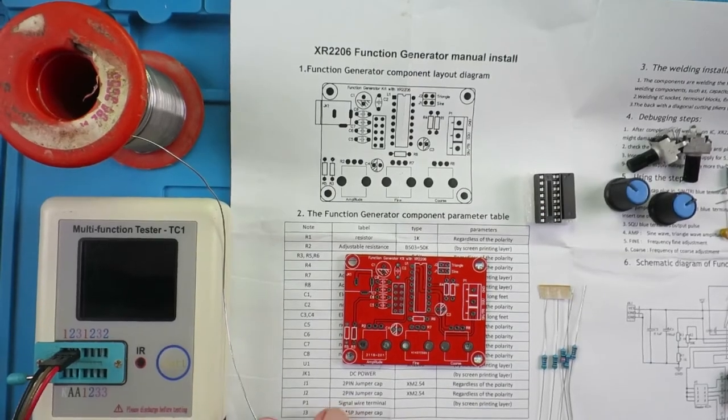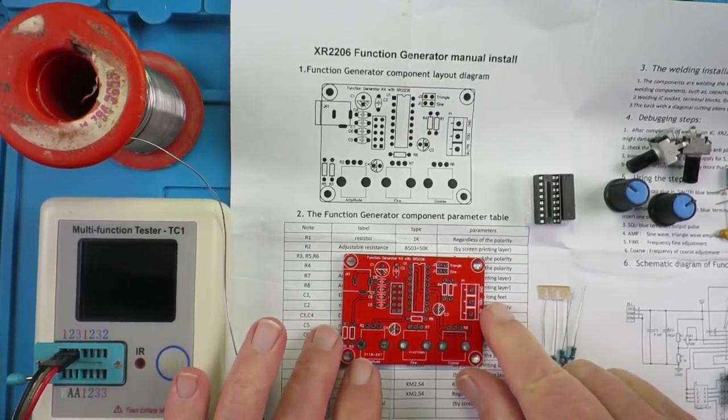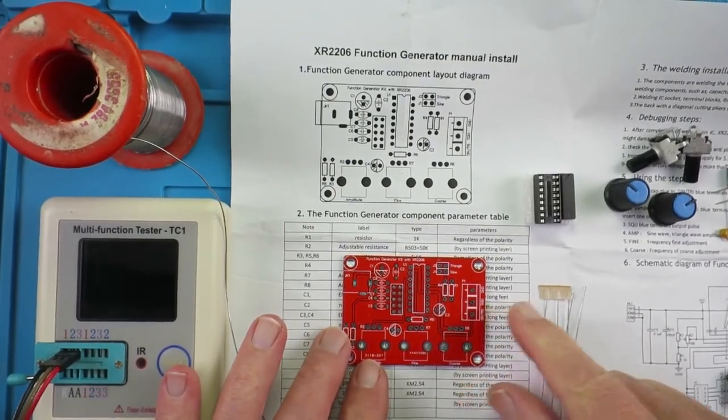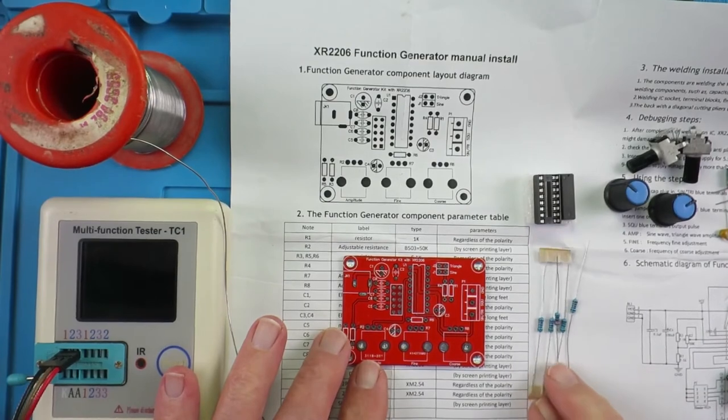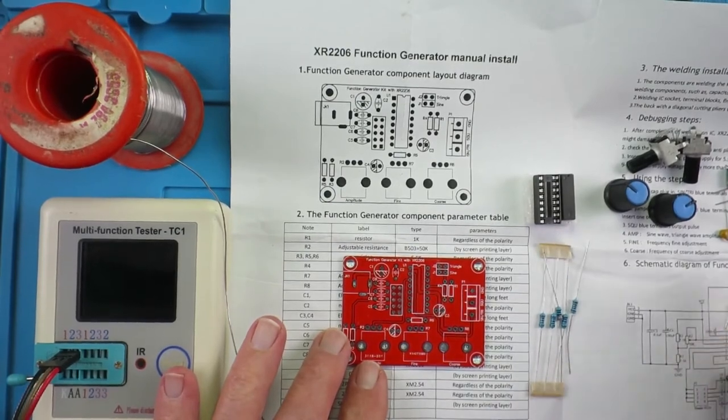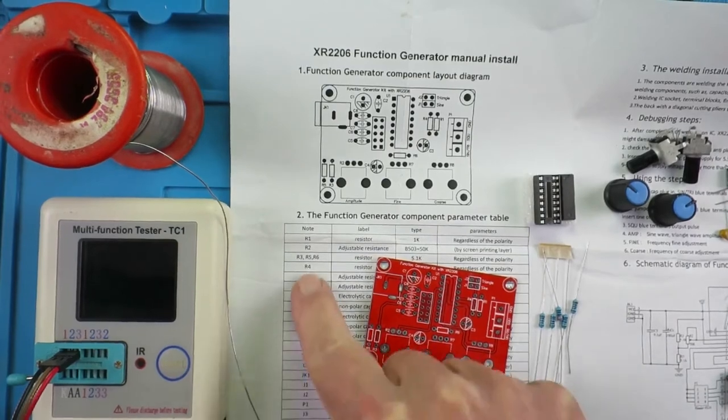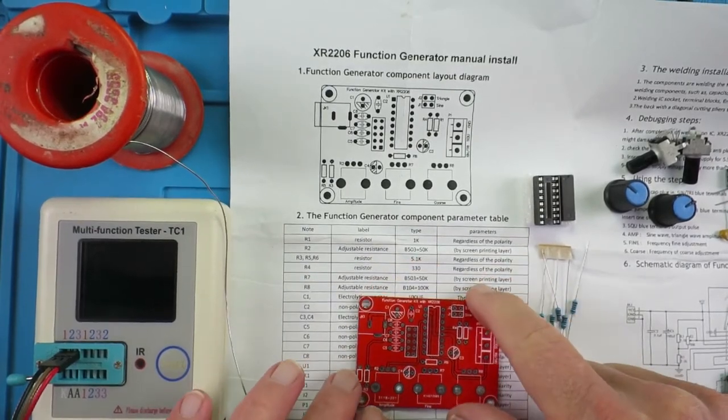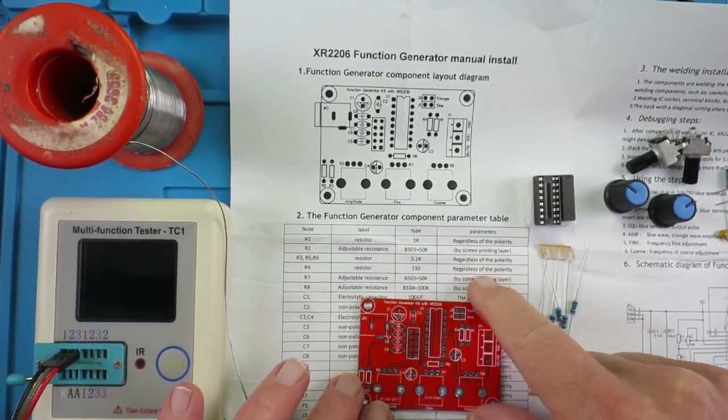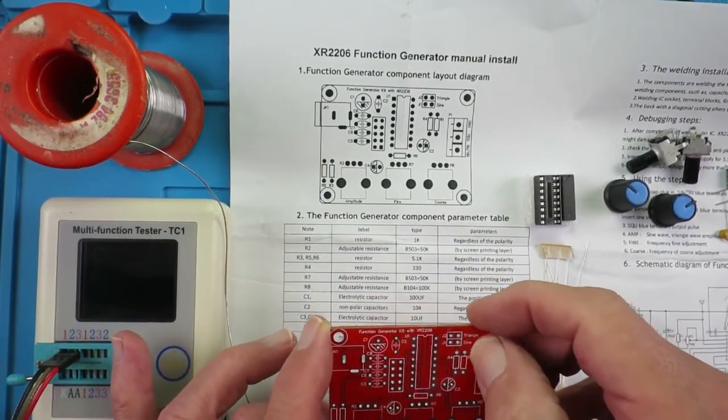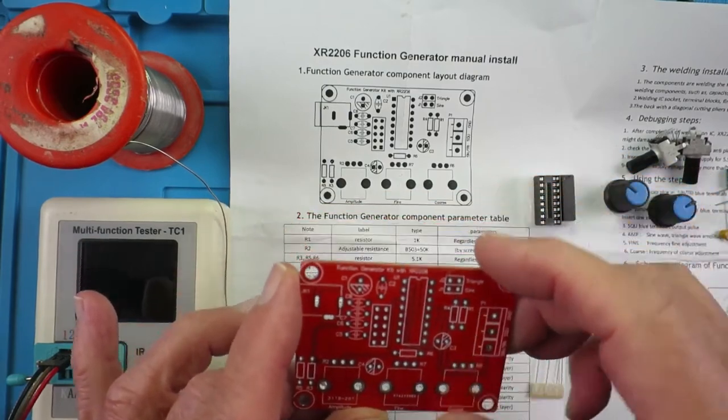The first thing to do is to assemble the little circuit board itself. And the general principle here is to start with the lowest profile components and work your way up in size, which is pretty much in the order that they have it here. So we're starting off with R1, which is 1K.